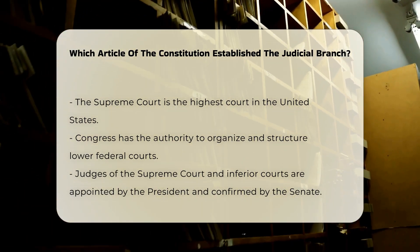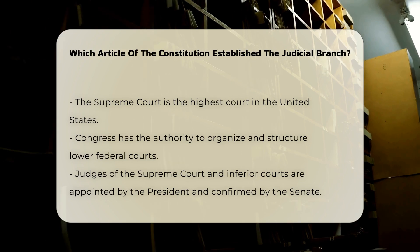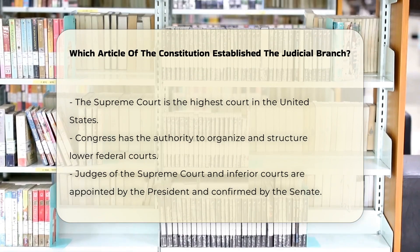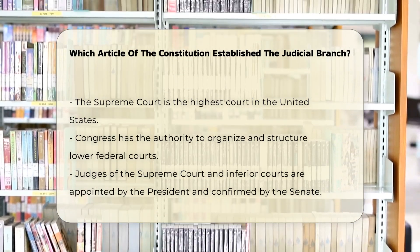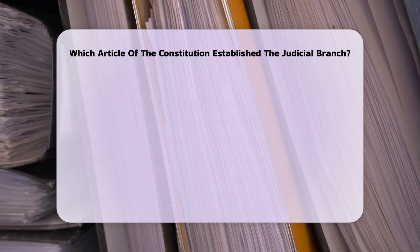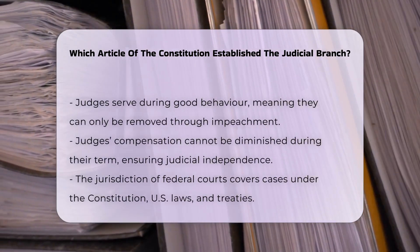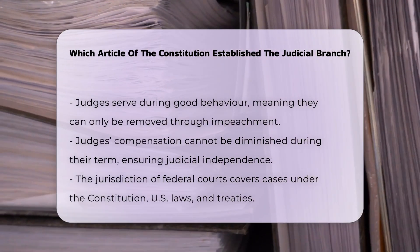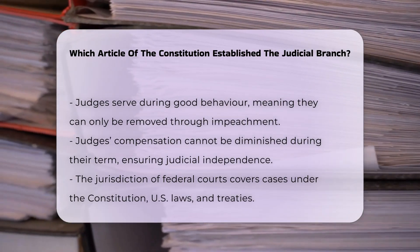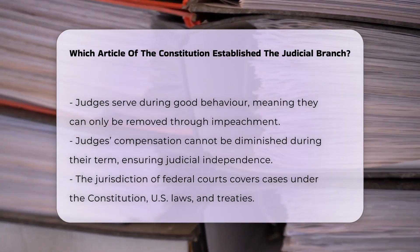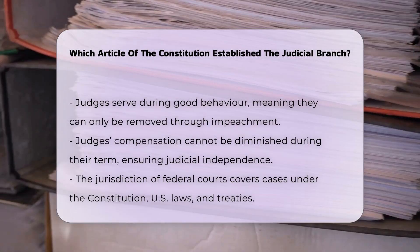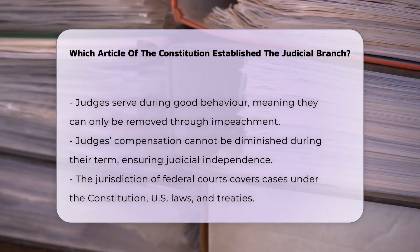The article also grants Congress the authority to decide on the organization and structure of the lower federal courts. The judges of both the Supreme Court and the inferior courts are appointed by the President and confirmed by the Senate. They hold their offices during good behavior, meaning they can only be removed through the impeachment and removal process, and their compensation cannot be diminished during their term in office, ensuring their independence from the other branches of government.